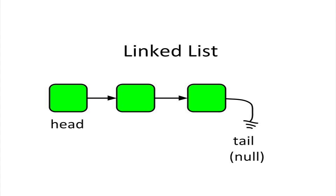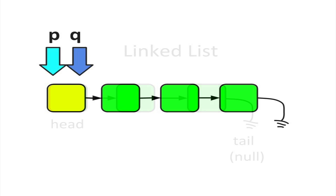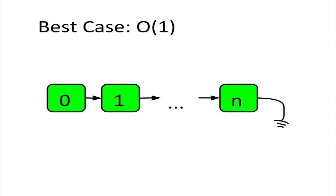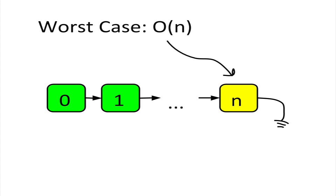Looking up elements in a linked list is a lot less efficient. You can't just directly access any node in the list. Instead, you have to traverse down the list until you find it. If the item you are looking for is at the front of the list, it's an O of 1 operation. If it's at the end, it's an O of N operation, where N is the total number of nodes in the list.